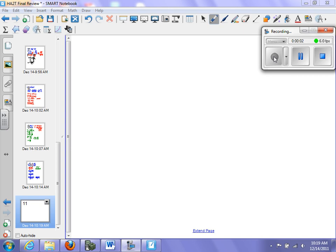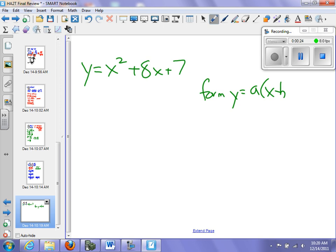I need to write the equation y equals x squared plus 8x plus 7 in the form y equals a times x minus h squared plus k. This form is called vertex form.